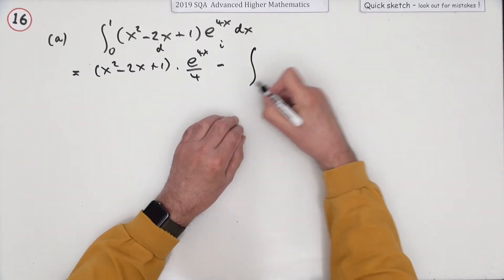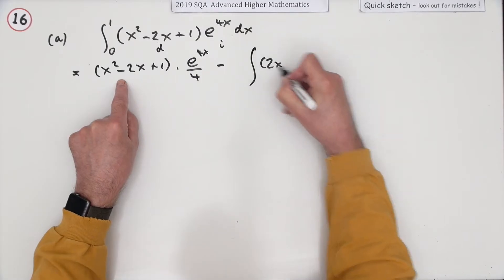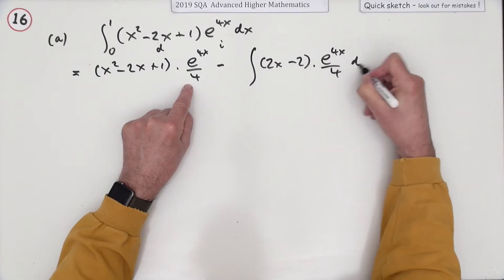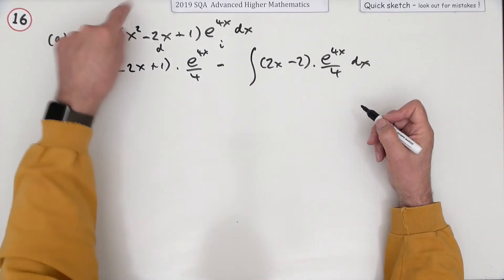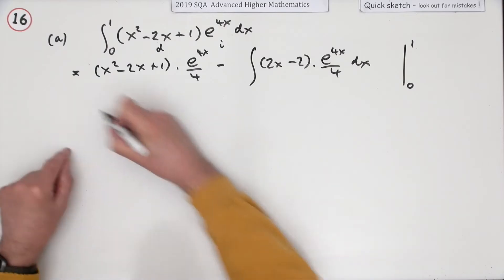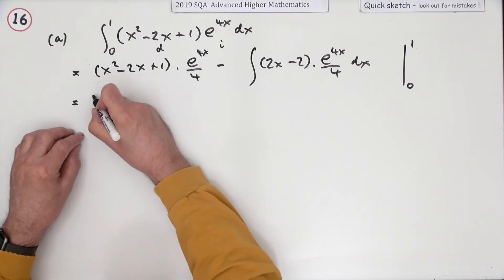I'm going to show to the side that it's meant to be evaluated. Minus integral of, now differentiate, so that's going to be 2x minus 2 and carry this forward e to the 4x upon 4 dx. That's what it produces, but it's to be evaluated. Unfortunately, I'm just going to show it by putting this evaluated from 0 to 1, which is a valid expression.